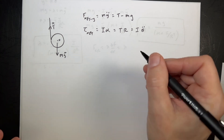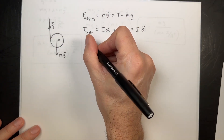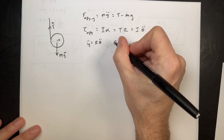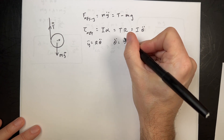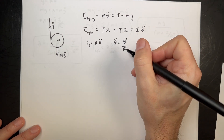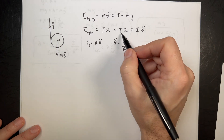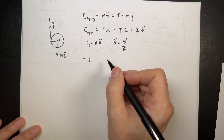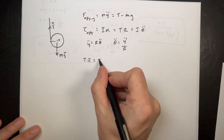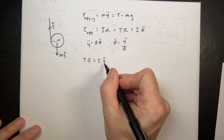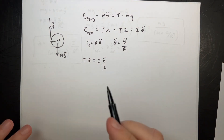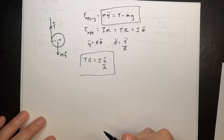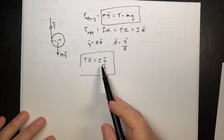Using rolling without slipping: Y-double-dot equals R·theta-double-dot, so theta-double-dot equals Y-double-dot / R. Substituting gives T·R = I·Y-double-dot / R. These are essentially the same equations as before, just with T and Y-double-dot instead of lambda.